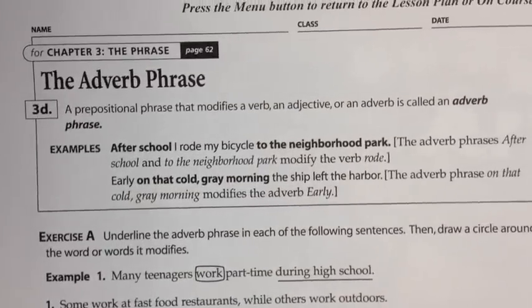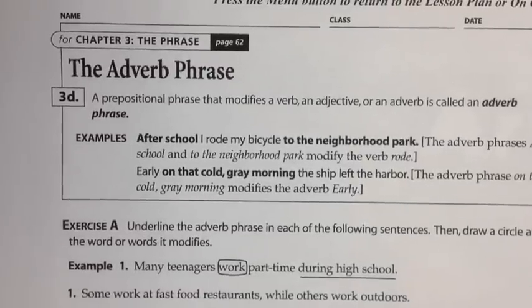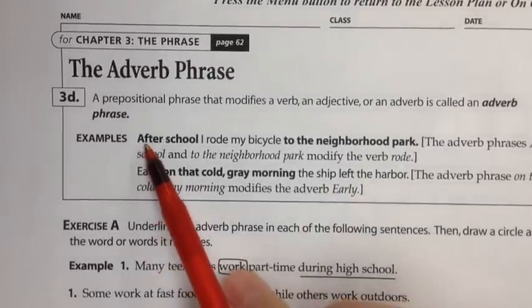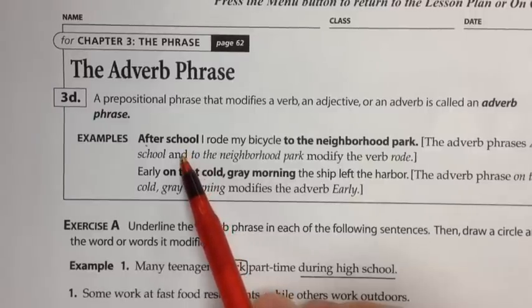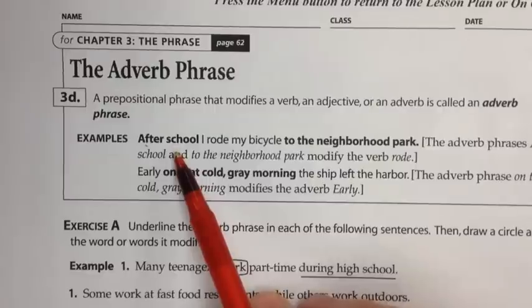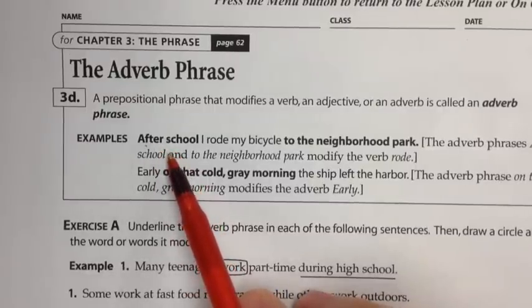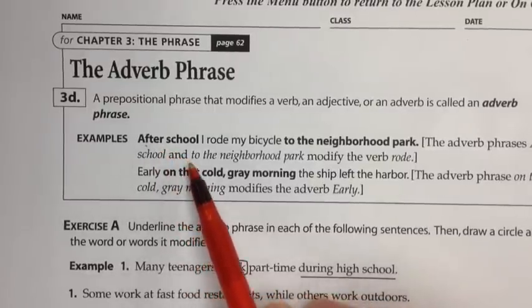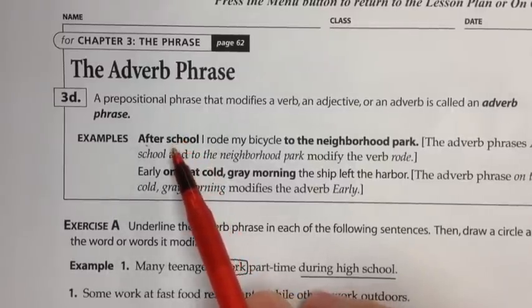So here is the adverb phrase. The adverb phrase is very similar to the adjective phrase in that it has a preposition and then an object forming one phrase. The difference, though, is that the adverb phrase will not tell us which one or what kind of a person, place, or thing. The adverb phrase will tell us when, where, why, how, or to what extent something is done or a description is accurate.